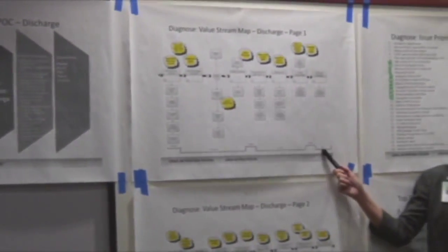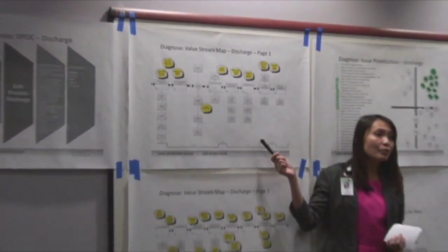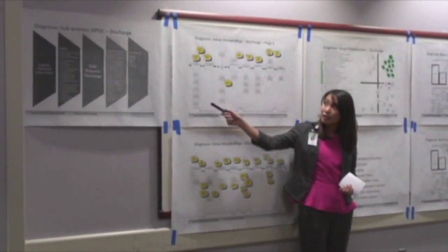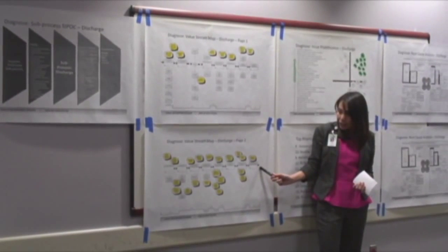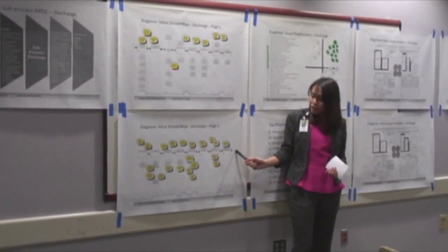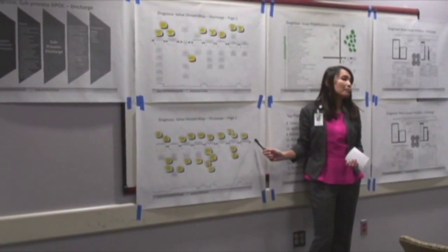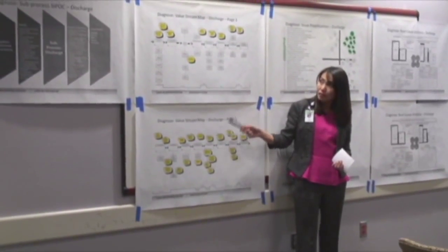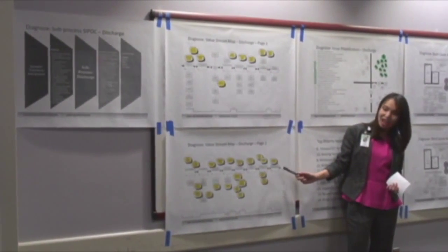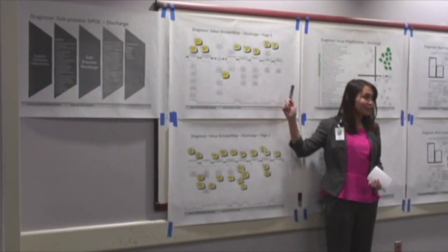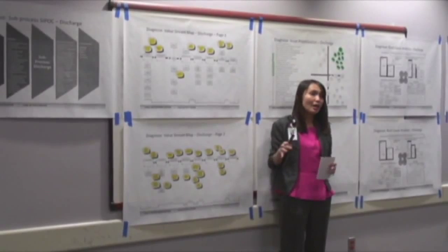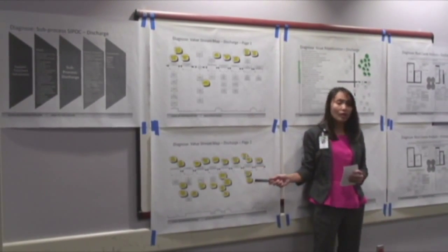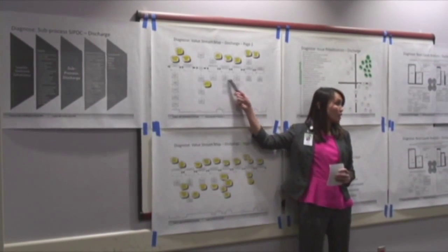We then moved on to the value stream map for the discharge team — our map starts from the time the discharge order is written until the patient is discharged from Epic. We are changing this so it will end at the time the bed is ready for the new patient. As you can see, there are a lot of steps, and we've identified many that we really don't need. If discharge planning is done appropriately, those steps don't have to be there — but this is current state, showing a lot of extra steps.